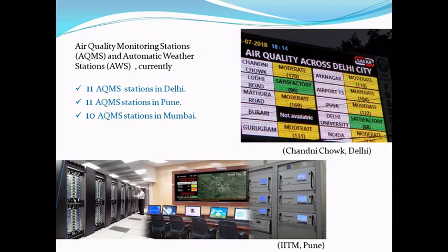This is how the data is displayed in Delhi. There is one electronic billboard in Chandni Chowk in Delhi. There are 11 air quality monitoring stations in Delhi, 11 in Pune, and 10 in Mumbai. This image shows the inside of the IITM facility in Pune.